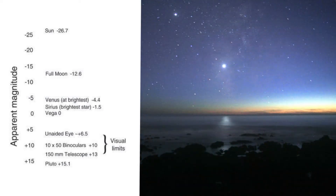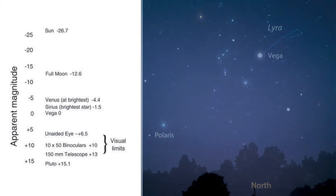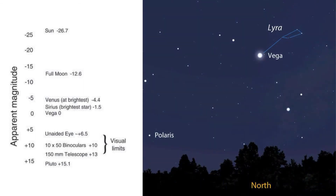The planet Venus, also known as the morning star or evening star, has a brightness of about −4.4. The brightest star in our night sky is Sirius, with a brightness of −1.5. Vega, as mentioned, is defined as the reference point and has a brightness of 0.